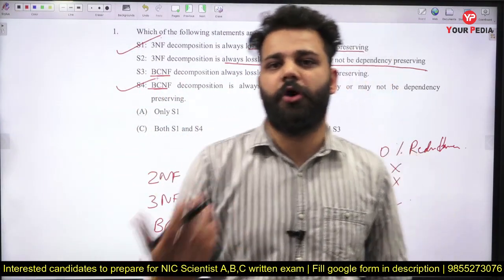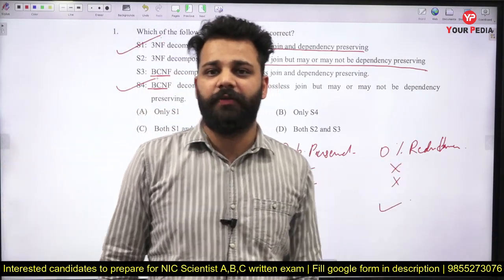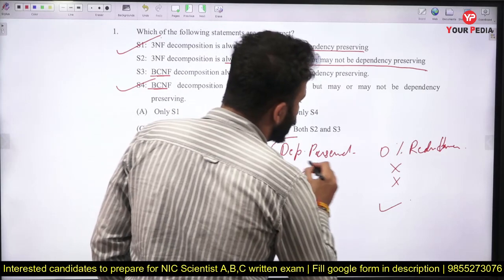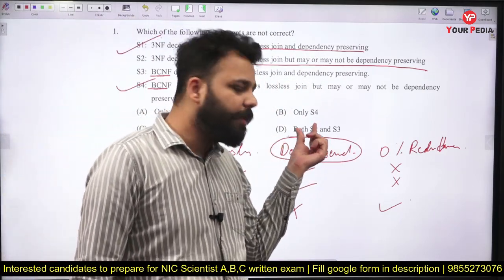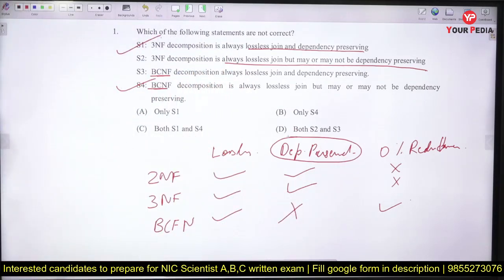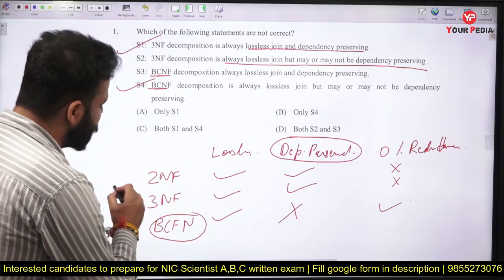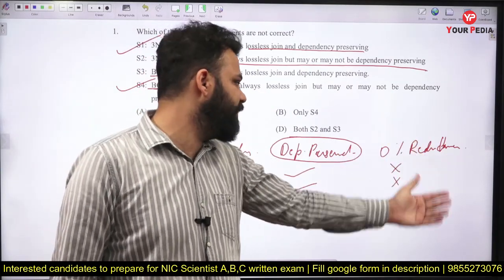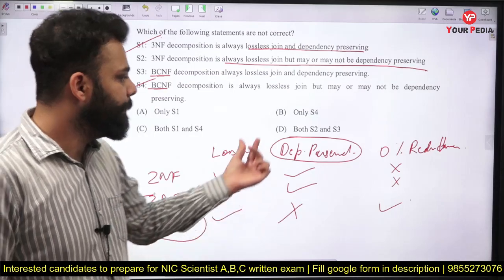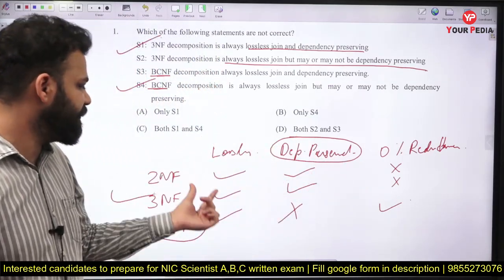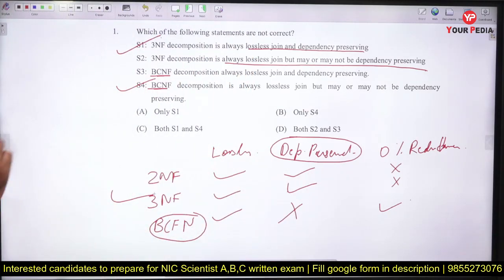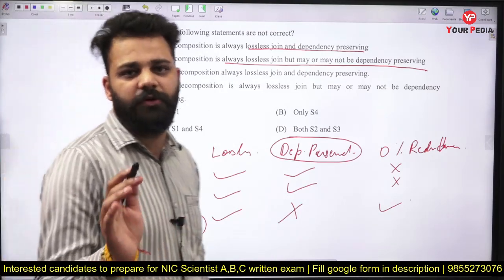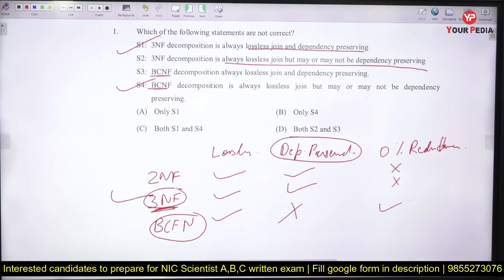When selecting the best normal form, BCNF provides 0% redundancy. But if there is some redundancy we can manage with that — we cannot manage to lose our functional dependencies. This is why BCNF is the higher normal form but we prefer 3NF over BCNF. We always prefer 3NF because though it may not give 0% redundancy, the dependency preserved property and lossless decomposition property are both maintained. These two properties have higher priority than 0% redundancy. So the best normal form is 3NF, and the correct option is both S1 and S4.